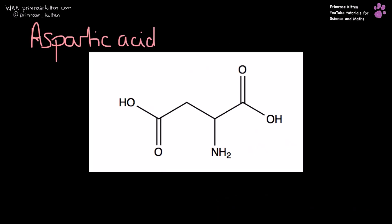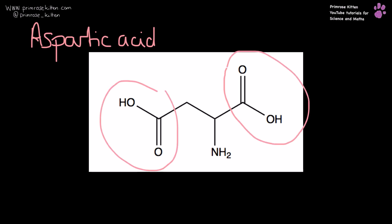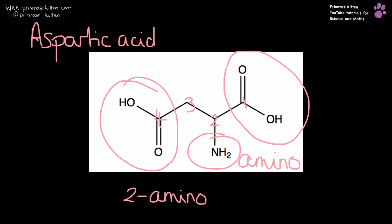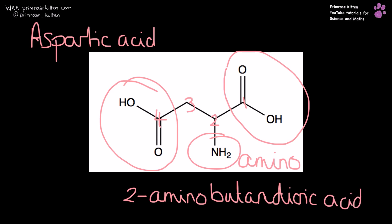Aspartic acid here. We have an acid group over here, carboxylic acid group over here. Numbering from the right-hand side so we get the lowest numbers possible: one, two, three, four — so that is four carbons in total. Amino group here. Two-aminobutanedioic acid — that's one word — 2-aminobutanedioic acid.